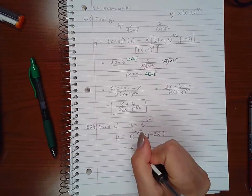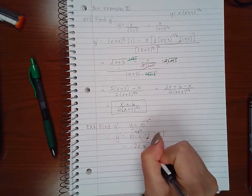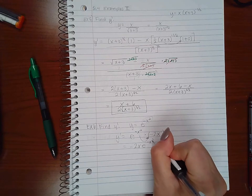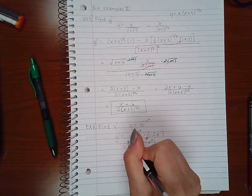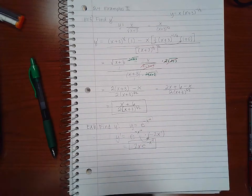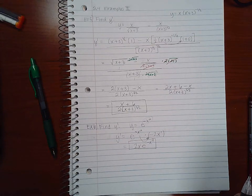And if I simplify this, I get negative 2x times e to the negative x squared.